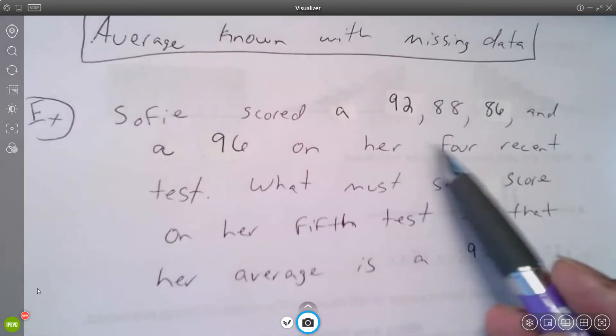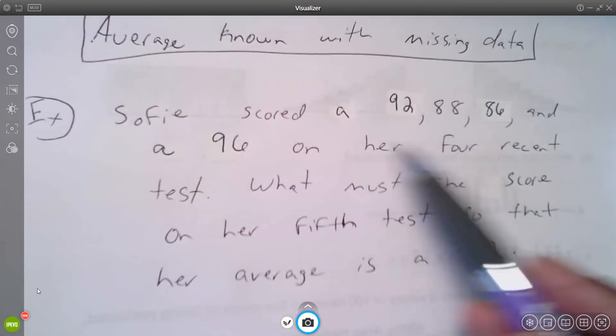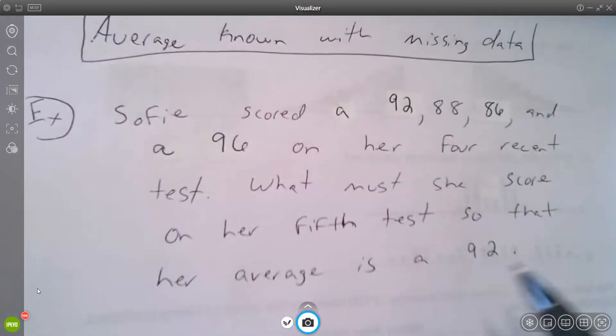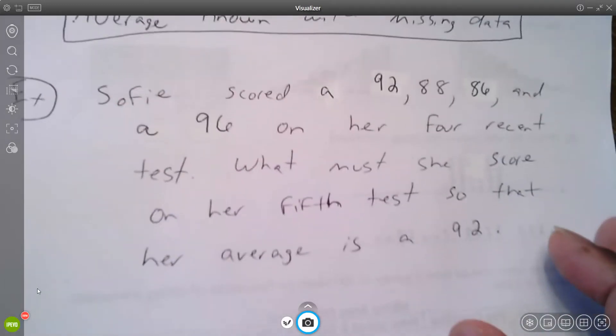Now you can figure this out, you can play with numbers and figure out what you have to add up to be the fifth number to get an average of 92. But what I want you to be able to do is write an equation for it.